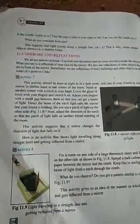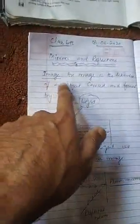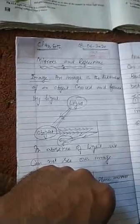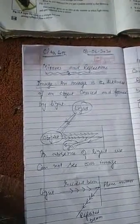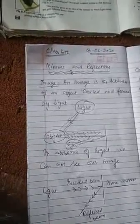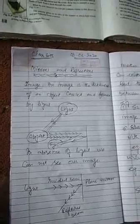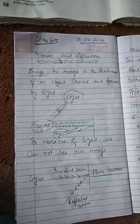First of all, what is an image? Image is the likeness of an object carried and formed by light. The image is the likeness of an object.